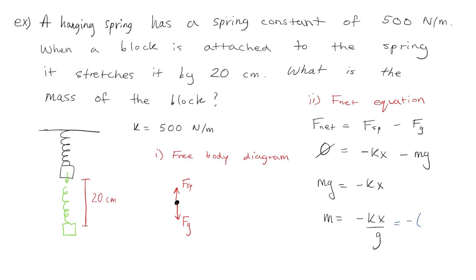What we see is that the mass of the block is equal to negative kx divided by g. I will plug in the value for the spring constant k. Now, x is the displacement from equilibrium. If we set equilibrium as zero and we imagine we have a number line, we are going down from zero. So our displacement x would be negative 20 centimeters.